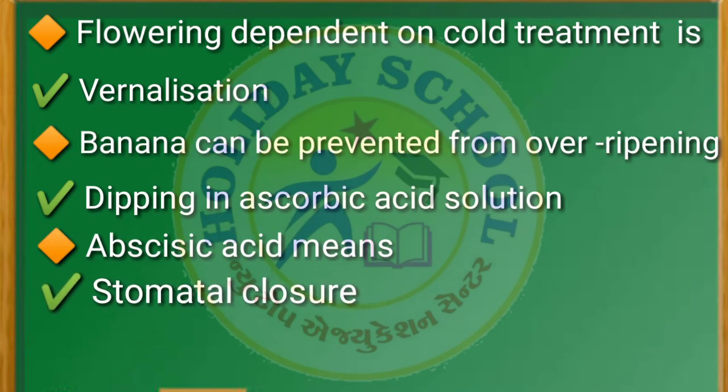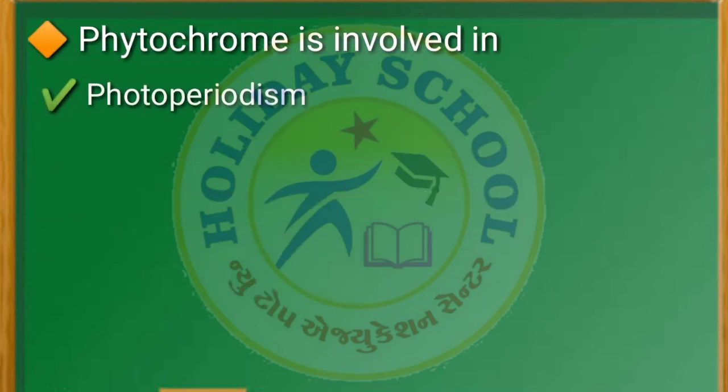Next question: cytokinin — the answer is helps retain chlorophyll. Next question: flowering dependent on cool treatment is — the answer is vernalization. Next question: banana can be prevented from over-ripening by — the answer is dipping in ascorbic acid solution. Next question: abscisic acid causes — the answer is stomatal closure.